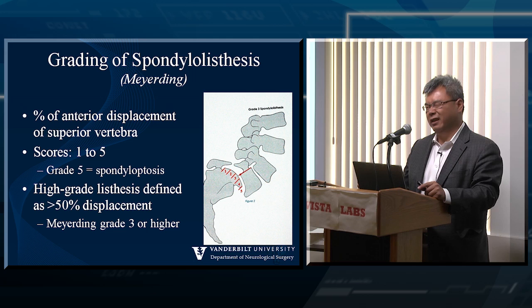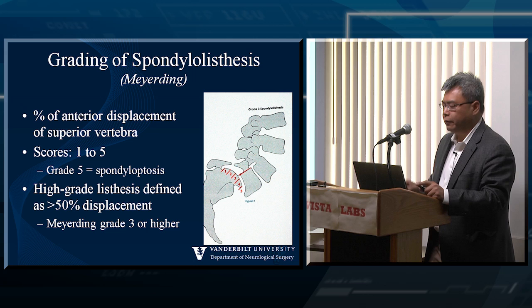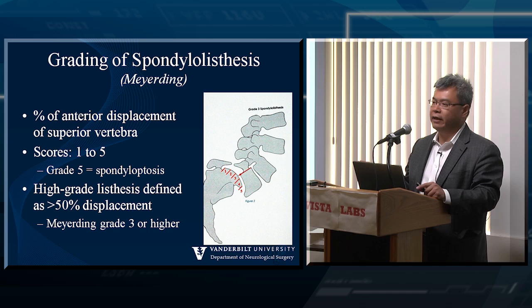One issue with high-grade is that frequently you'll hear people call things a higher grade than it really is — if it's like 40%, most people will start calling it grade 3. In general, the Meyerding classification is very specific. However, this is not the only way you want to look at spondylolisthesis. All this talks about is a translational component.